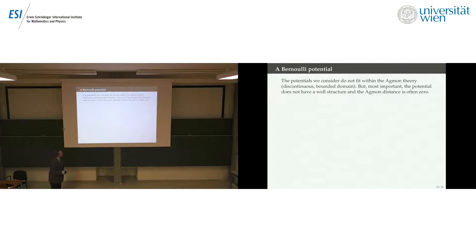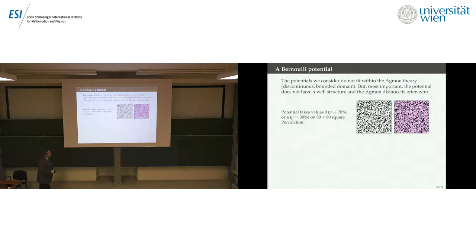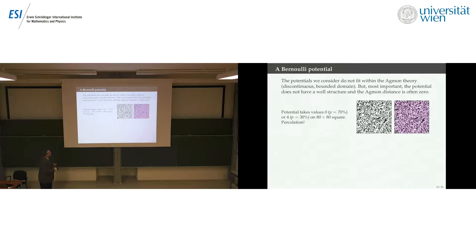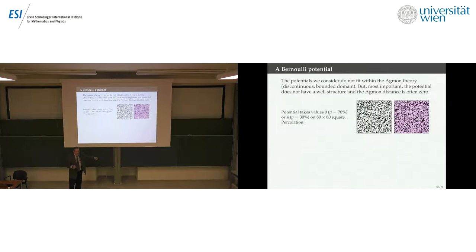Unfortunately, that's one of the most important tools in localization theory, but it doesn't apply to our problem directly. Take an extreme example: I divided the square into 80×80 sub-squares and set the potential either zero or a positive value of four, with a weighted coin — 30% of the squares have the positive value, below the percolation level. That means the white squares form a huge connected set, so the Agmon distance between any two points in the white squares is zero, meaning exponential decay doesn't tell you anything.